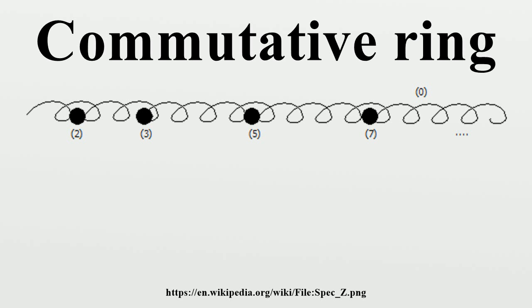If V is some topological space, for example a subset of some R^n, real or complex valued continuous functions on V form a commutative ring. The same is true for differentiable or holomorphic functions, when the two concepts are defined, such as for V a complex manifold.